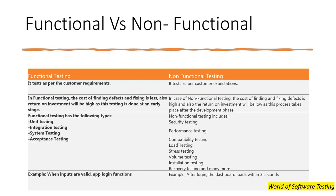Moving to further differences: functional testing tests as per the customer requirements described in the BRS document, which is converted into the SRS document. In functional testing, the cost of finding and fixing defects is less and the return on investment is high, as testing is done at an early stage. In non-functional testing, the cost of finding and fixing defects is high and the return on investment is low, because this process takes place after the development phase.